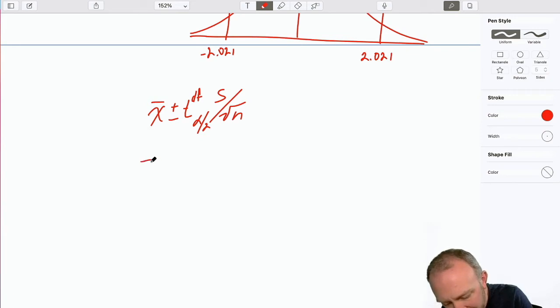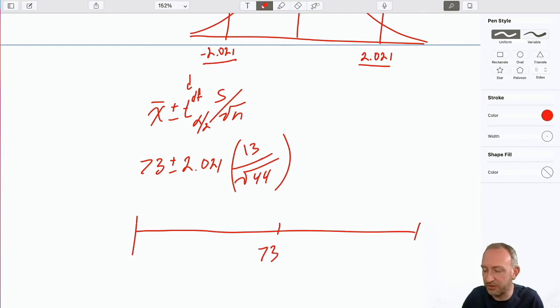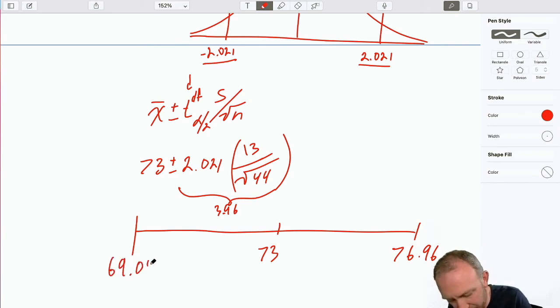So our sample mean was 73 plus or minus this critical value. I've got it right there, 2.021. Our standard deviation was 13, our sample size was 44. So now this is going to give me an interval centered on 73, and that margin of error, 2.021 times 13 over root 44, that margin of error is 3.96. So that gives me an upper limit of 76.96 and 73 minus, that gives me a lower limit of 69.04.